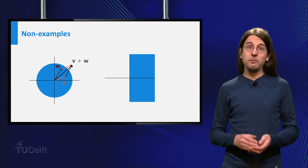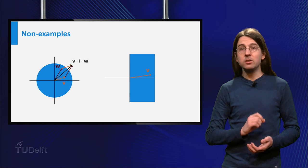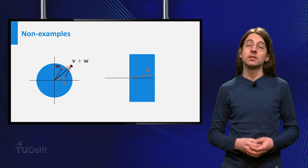What about everything to the right of the y axis? Nope. Minus 1 times the indicated vector is not in this set.